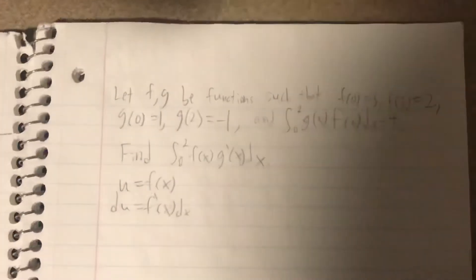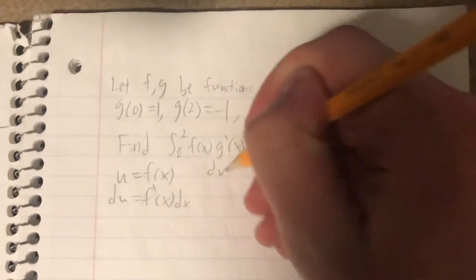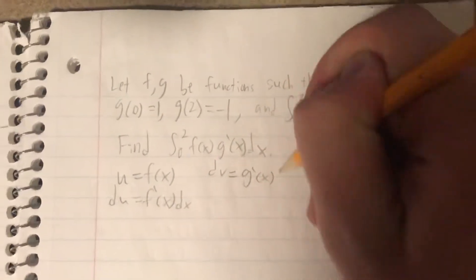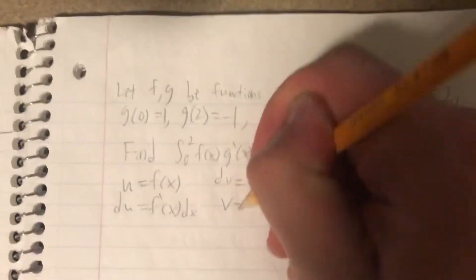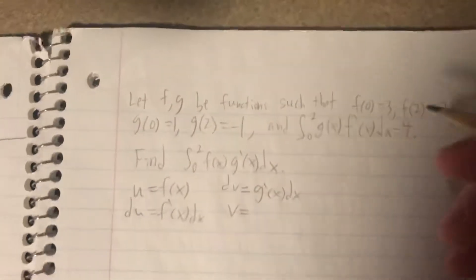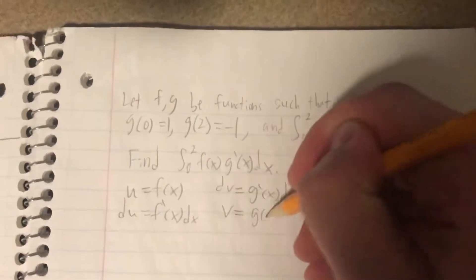So for dv, of course, I'm going to set that equal to g prime of x dx. And when we get v, of course, this is going to be the anti-derivative of g prime of x, so it's just g of x.